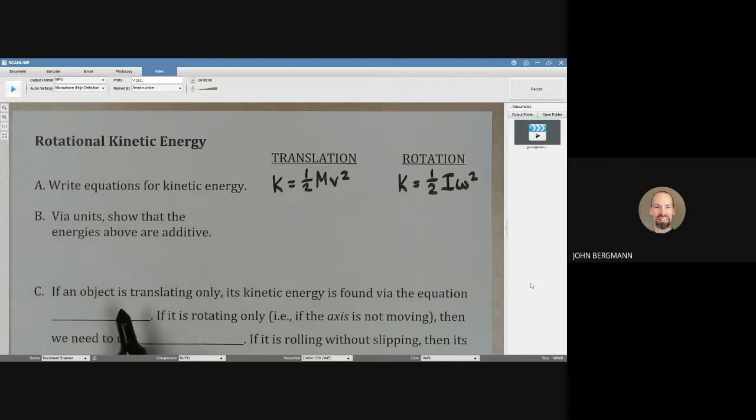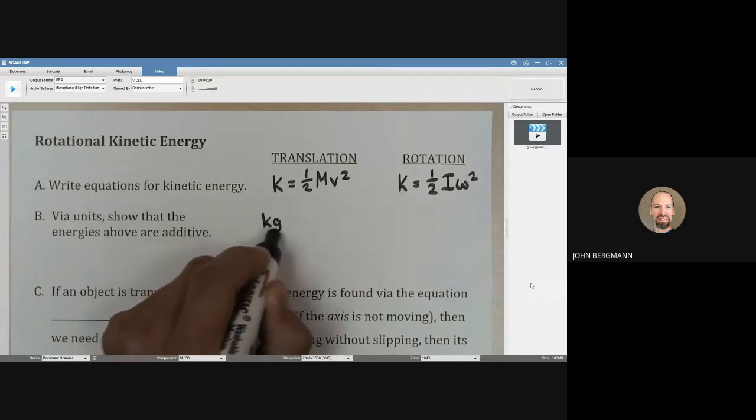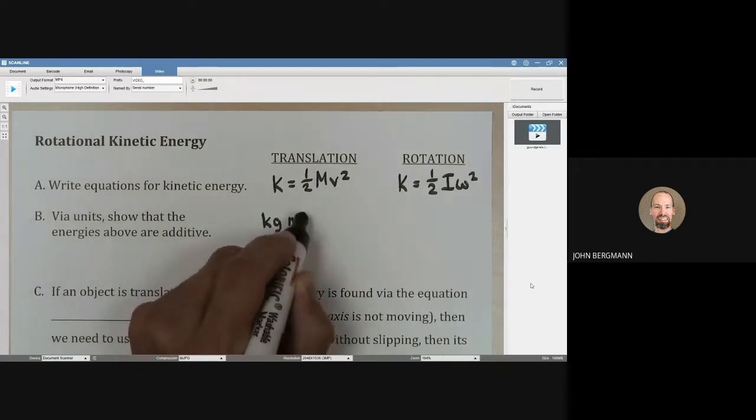Via units, show that the energies above are equivalent. On the right side here, we've got kilograms and then we've got meters squared over seconds squared.